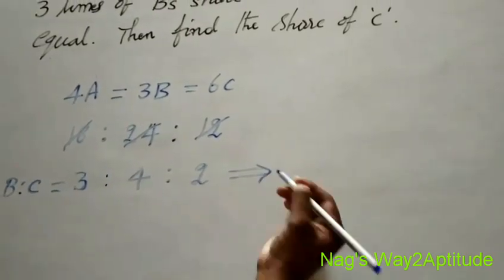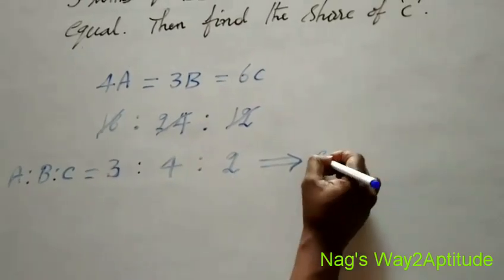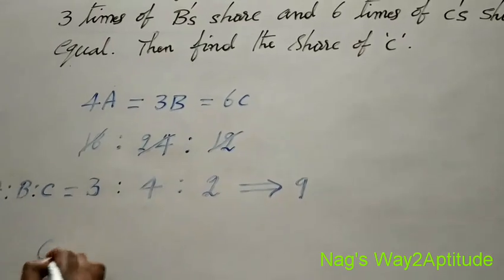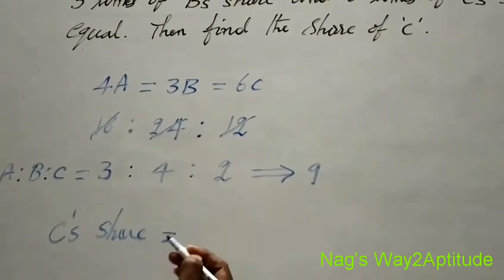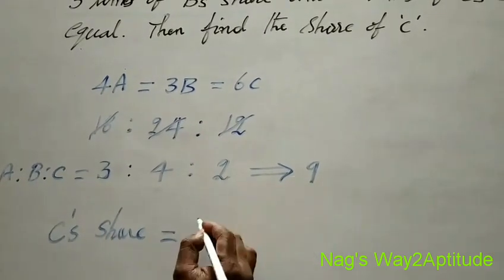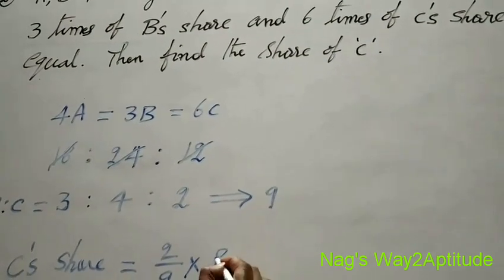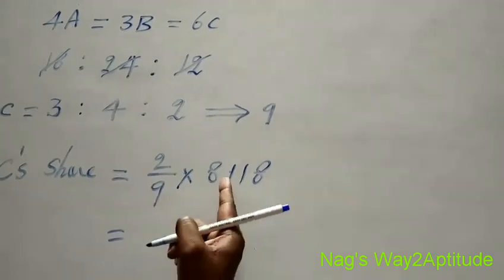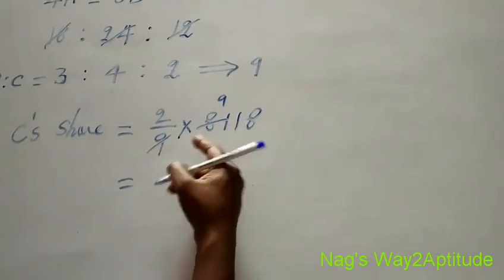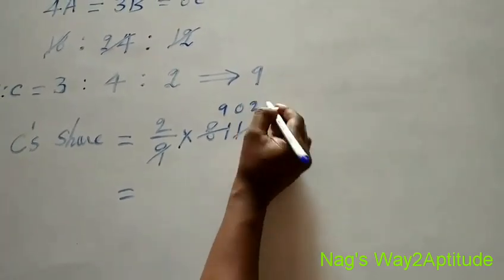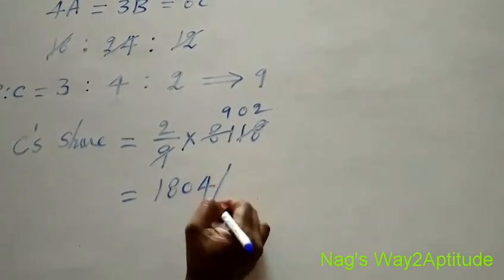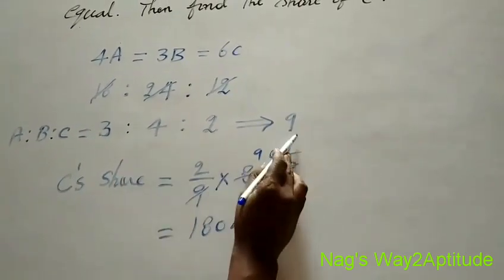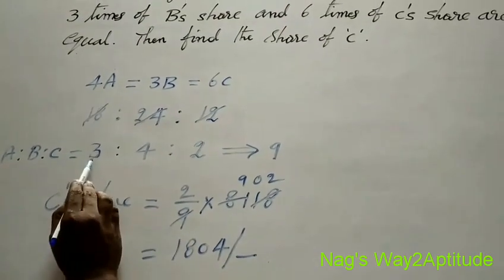The total parts are 3+4+2=9. What is asked is the share of c. The part of c is 2. So c's share is equal to 2/9 of the total amount, which is 8,118 rupees. Calculating: 2/9 × 8118 = 1,804 rupees. So c's share is 1,804 rupees. If b's share is asked, you take 4/9 × 8,118. If a's share is asked, you take 3/9 × 8,118.